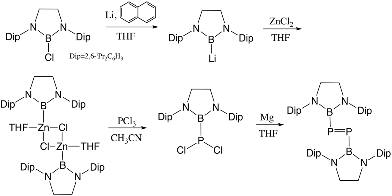Regarding alkyl-substituted diphosphene synthesis: the tris(trimethylsilyl)methyl group is also a very bulky group often used to stabilize multiple bonds between heavy elements. By dropwise addition of the corresponding phosphorus dichloride to sodium naphthalenide, the alkyl-group-stabilized diphosphene was obtained. ³¹P, ¹H, and ¹³C NMR spectra all proved the formation of this alkyl-group-stabilized diphosphene.